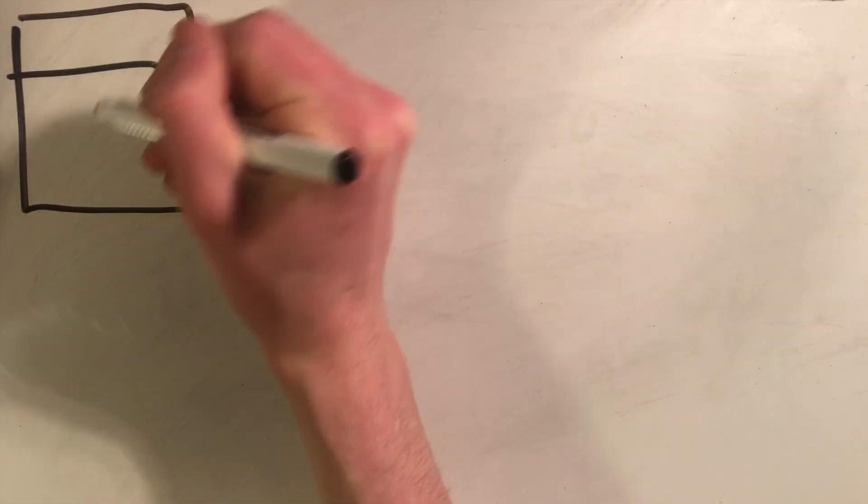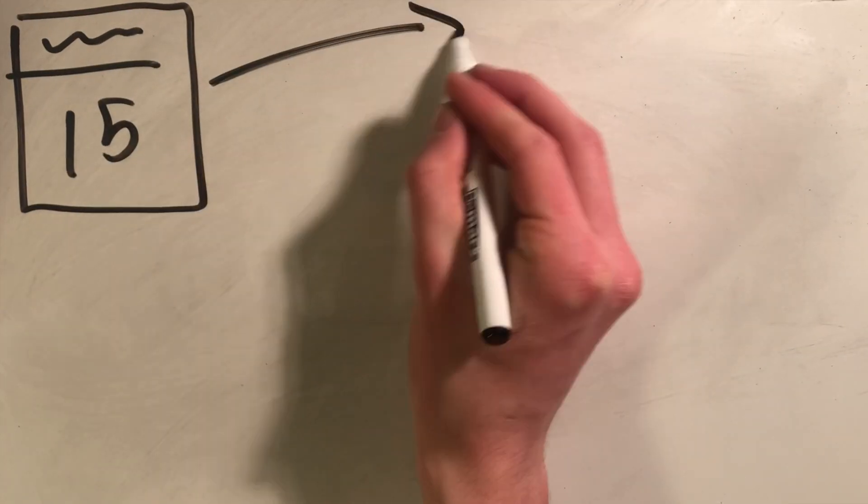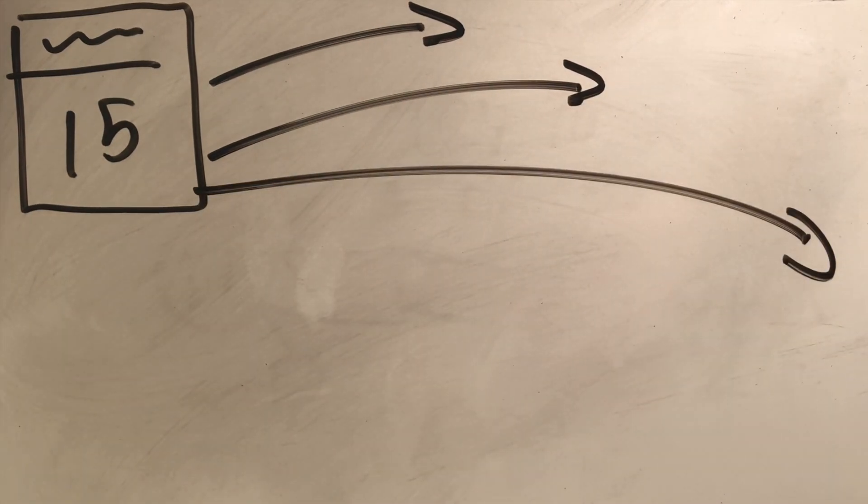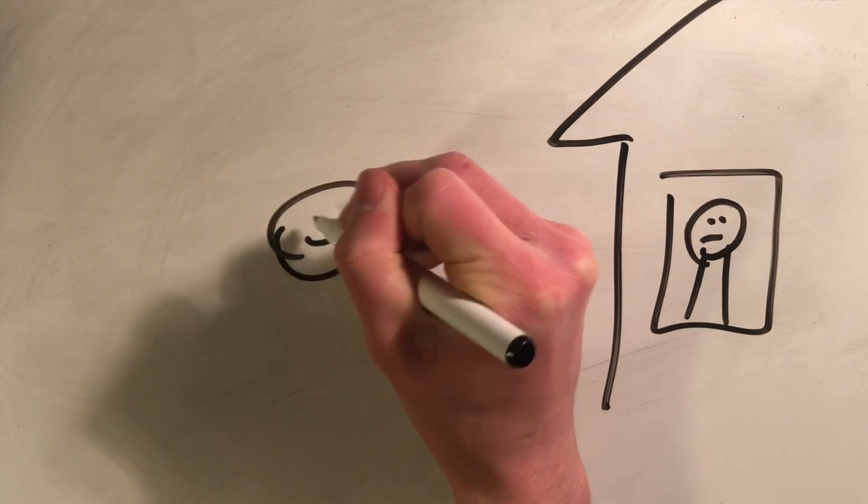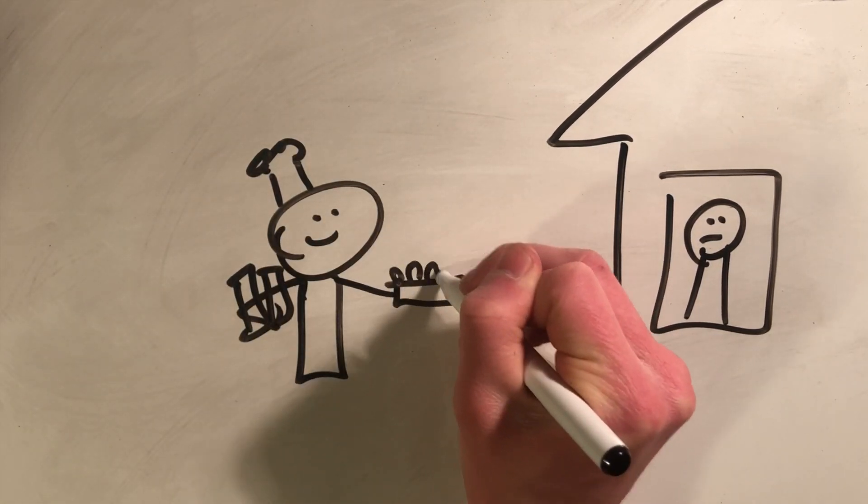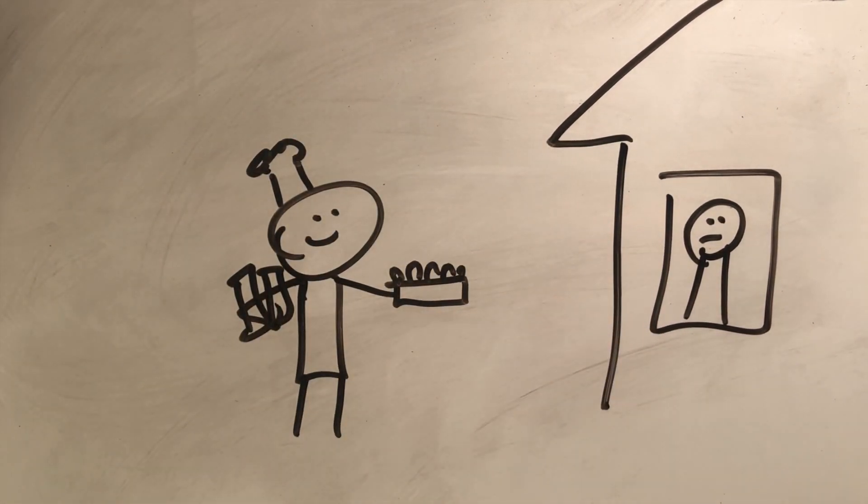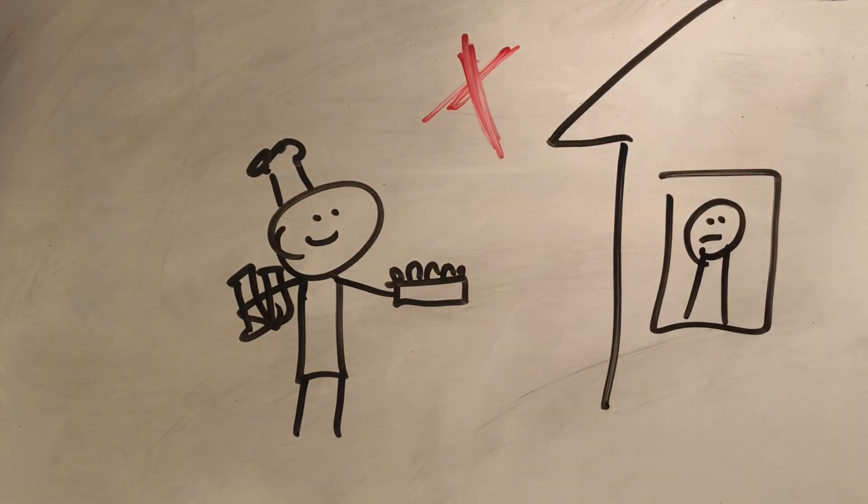If somebody made a cake with you last week, this doesn't mean they want to make another one today, tomorrow, or on any other day. Don't show up at their house with the flour, the sugar, and the eggs and say, but we made such good cake last week. Even if it was the best cake in the world, it does not mean that the person wants to keep making it. So do not try to make a cake with them.